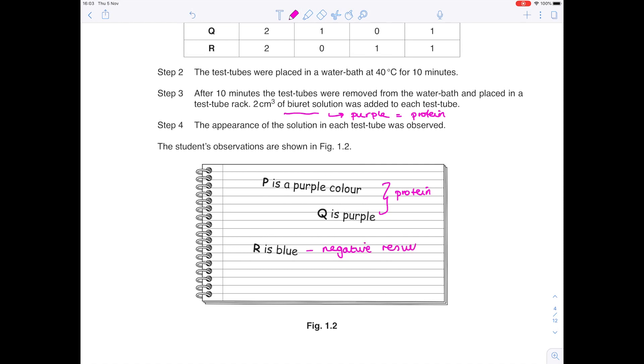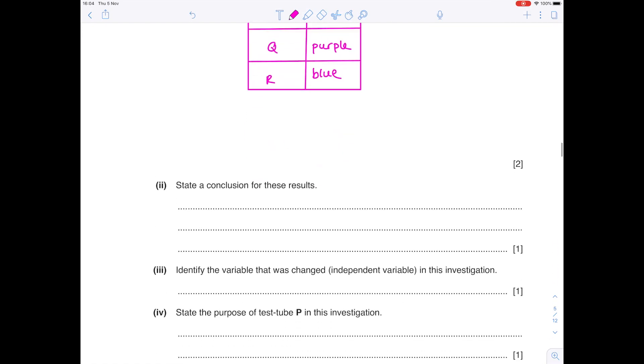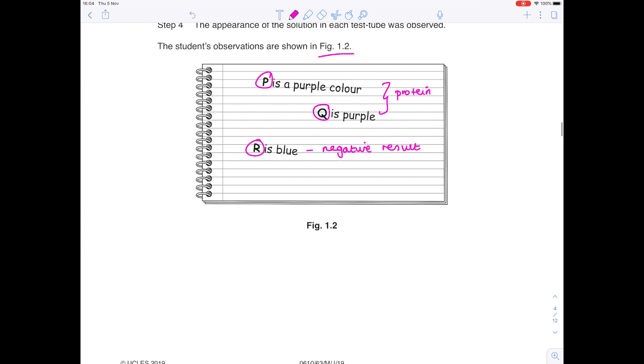I do like making notes to myself so I know what's going on. Prepare a table to record the observations shown in Figure 1.2. It's going to be quite a simple table. We need to mention the various test tubes as well as the colours that they've turned. So I think you'll need two columns. Test tube. The right-hand column, observation. You've got P, Q and R. For the first two they went purple. And the final result was blue. State a conclusion for these results. While I've already done that inadvertently up here, we can say that P and Q contain protein and that R does not.